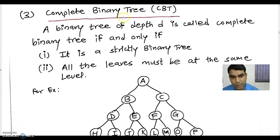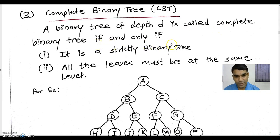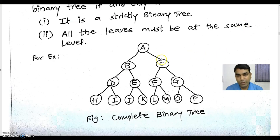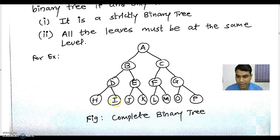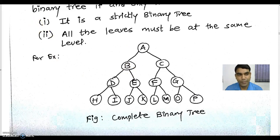The third type of binary tree is complete binary tree. A binary tree of depth D is called a complete binary tree if and only if it satisfies the following conditions: it must be a strictly binary tree, and all leaves must be at the same level. In this binary tree all the leaf nodes are at the same level and every internal node has two children, so it satisfies both rules for the complete binary tree. This can also be termed a full binary tree.